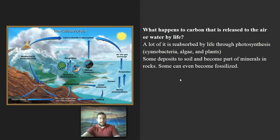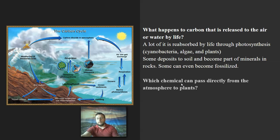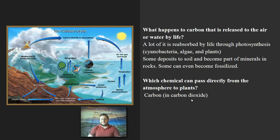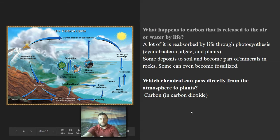Some carbon will escape life and be deposited into the soil to become part of minerals and rocks, or even become fossilized as entire organisms — bones and such have carbon in them. Do note that carbon is the only chemical in this list that can pass directly from the atmosphere to producers such as plants and algae, directly from the water or air to life. Other elements like nitrogen require bacteria to do that job, making it a slower cycle than the carbon cycle.